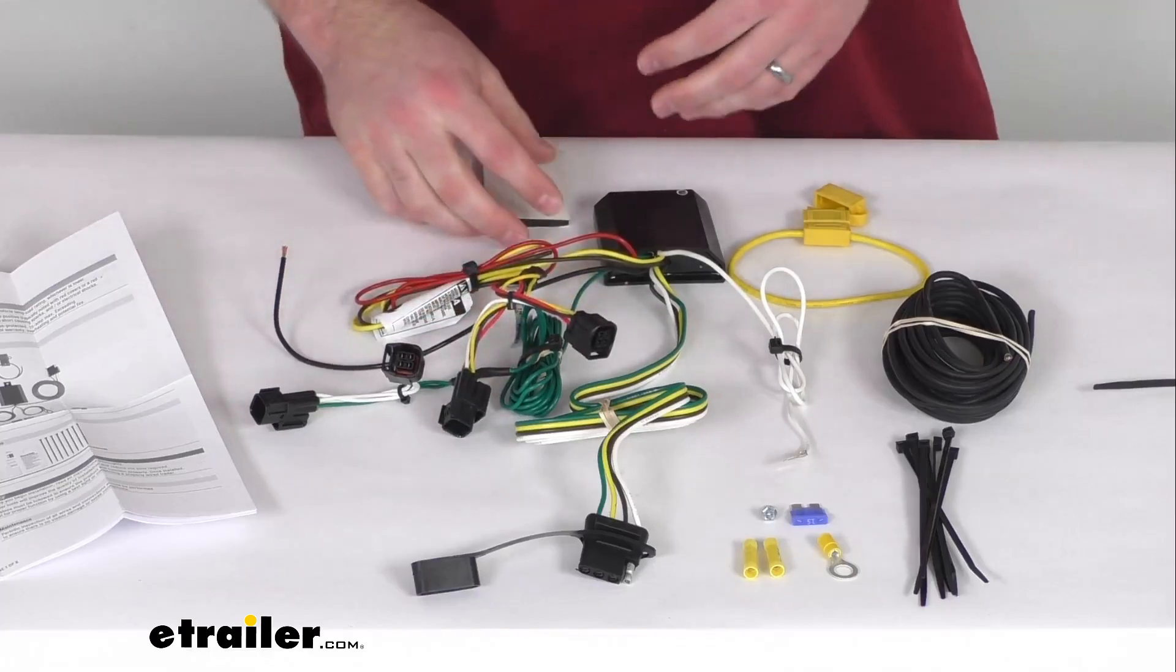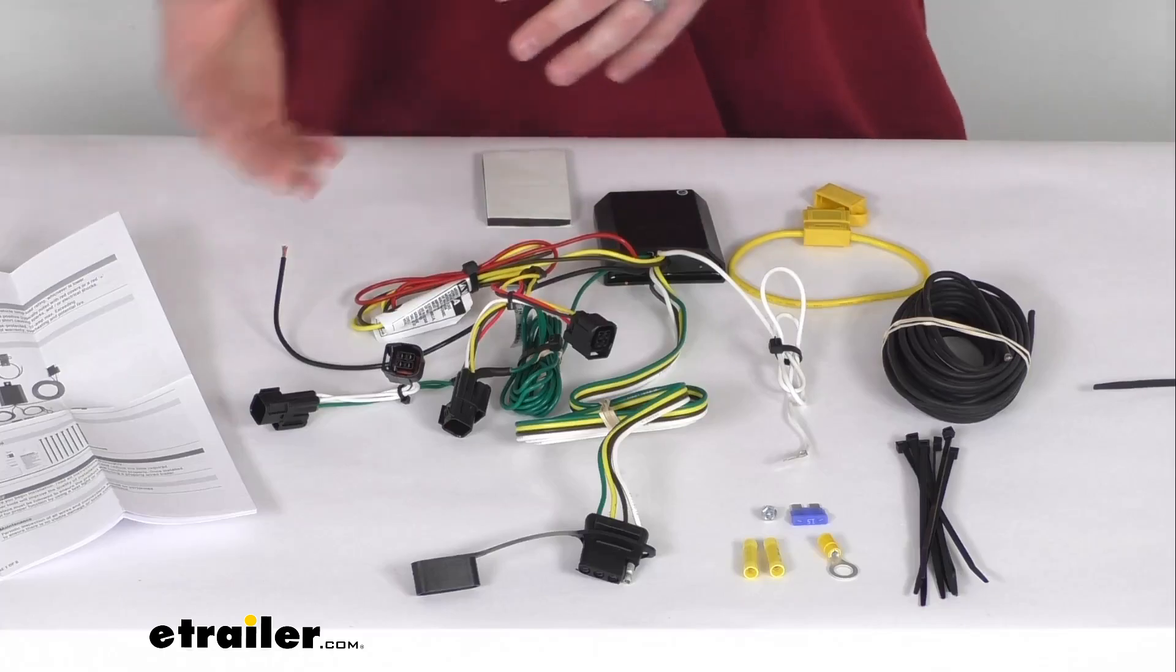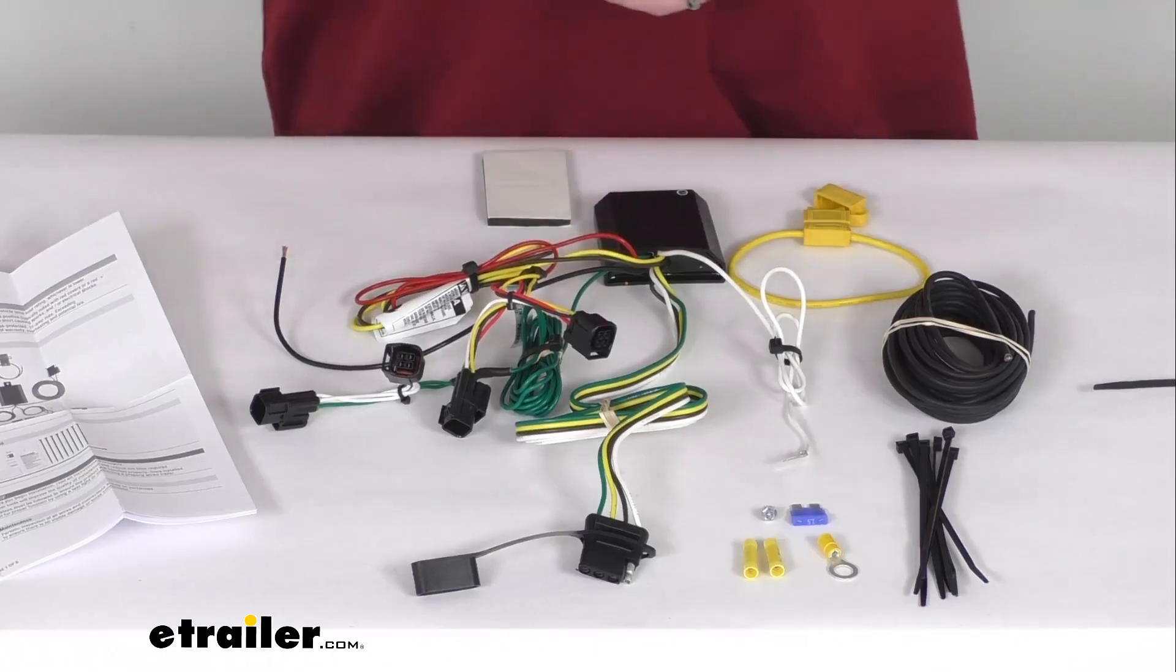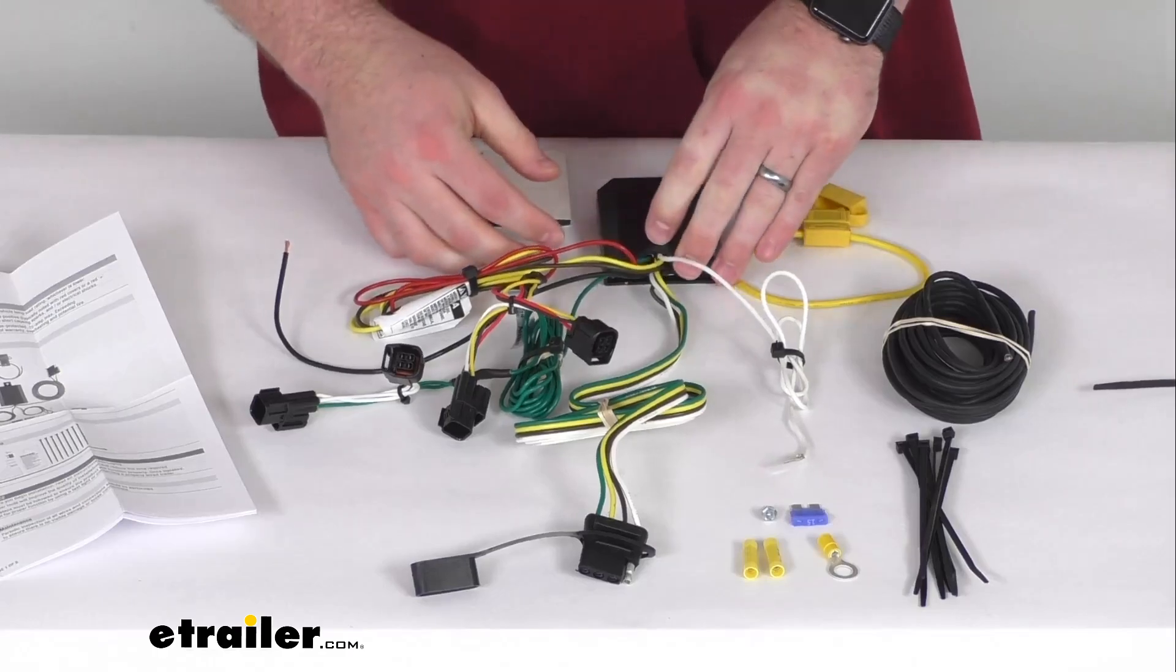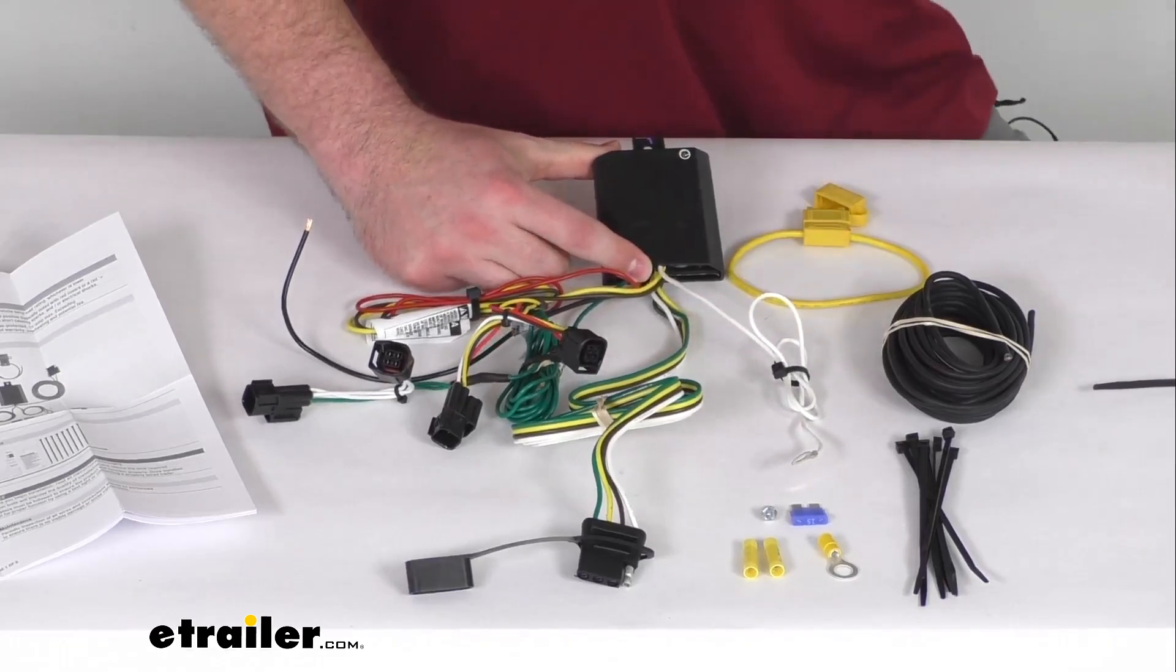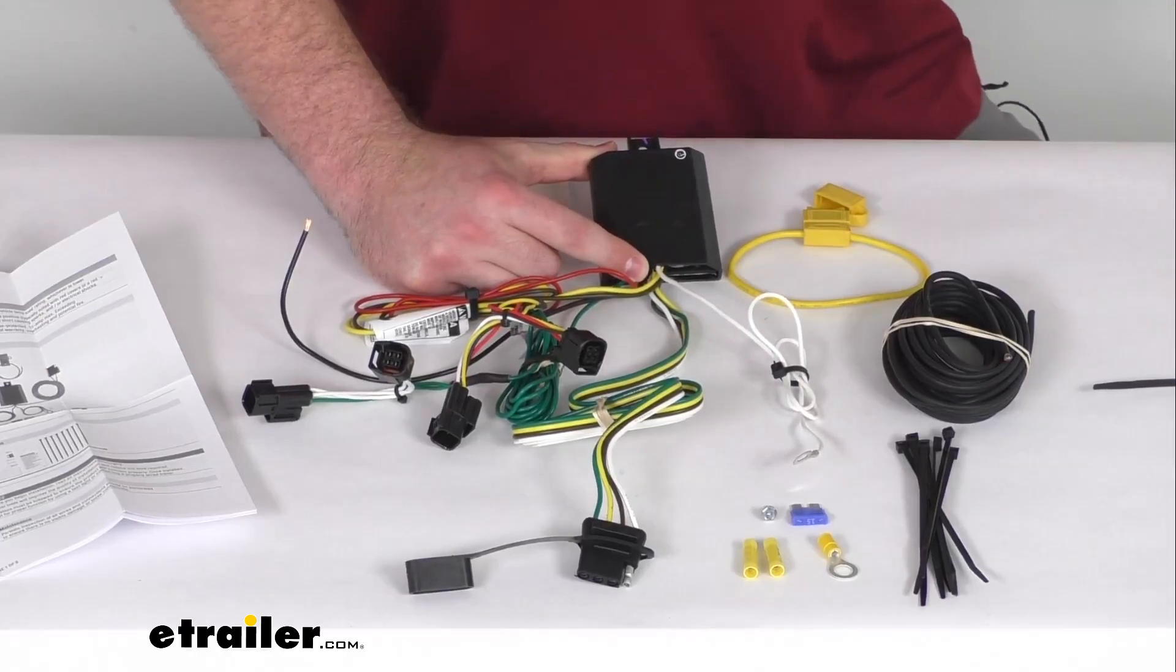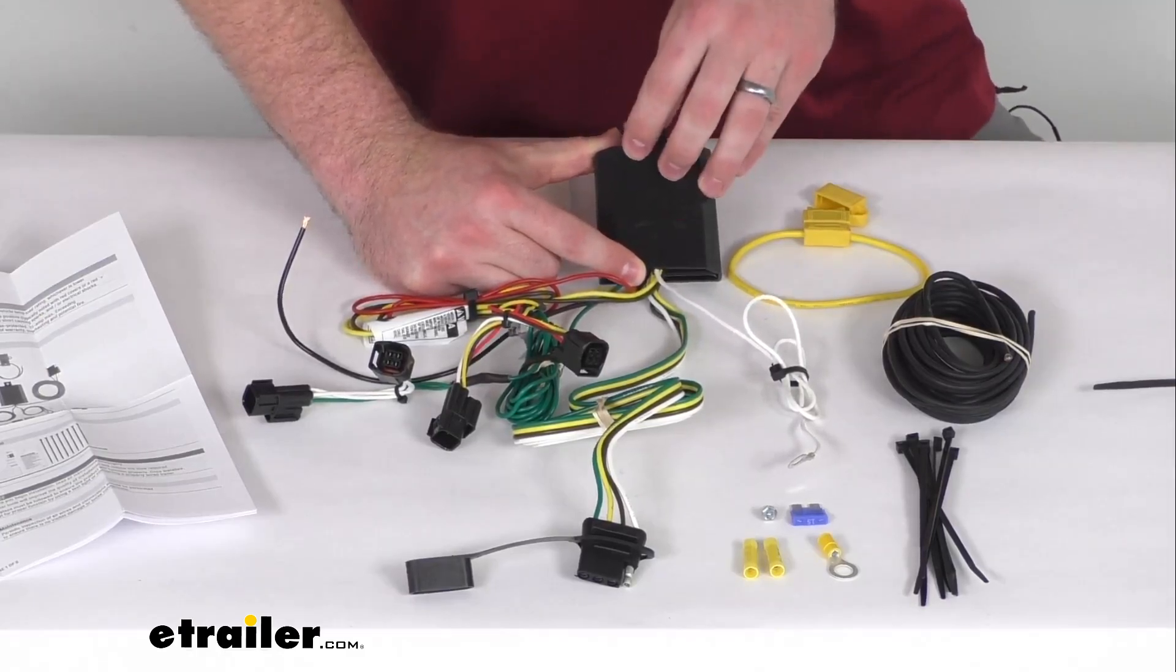This does have a trailer light converter that's going to ensure that your vehicle's wiring matches that of your trailer so that your trailer's lights will function properly. It does have a powered module that's going to connect to the battery of your vehicle to avoid overloading your vehicle's electrical system.